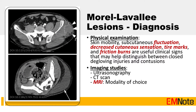Physical examination findings that may help distinguish between closed degloving injuries and contusions include skin mobility, subcutaneous fluctuation, decreased cutaneous sensation, tire marks, and friction burns. Imaging studies for MLL include ultrasonography, CT scan, and MRI.